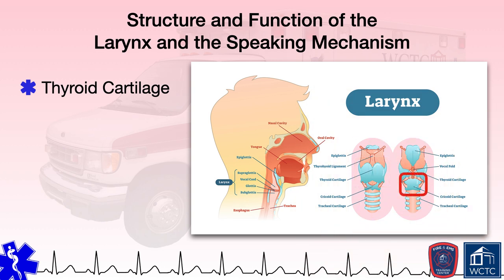Directly inferior to the thyroid cartilage is the cricoid cartilage. This piece of cartilage forms a ring that encompasses the larynx circumferentially, which is different from the C-shaped tracheal cartilage inferior to the cricoid cartilage that does not form a full ring posteriorly, so as to accommodate the esophagus and permit food to pass through unencumbered. The cricoid cartilage is considered to be the bottom of the larynx, with the trachea and its tracheal cartilage rings located inferior to it. In between the thyroid and cricoid cartilage is a cricothyroid membrane. When performing a cricothyroidotomy, this is the membrane through which the paramedic makes an incision.